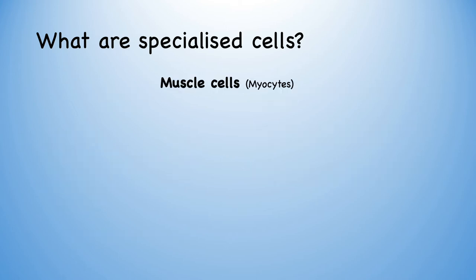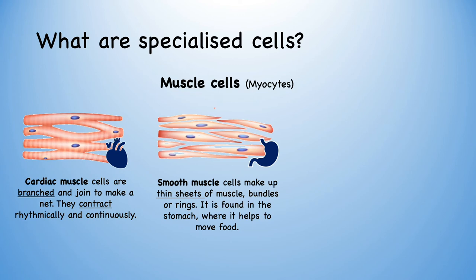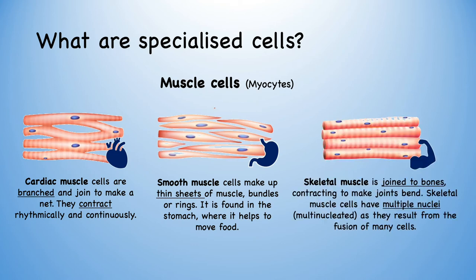The final type of specialised cell we'll look at today is muscle cells, or myocytes. There are three main types. Firstly, cardiac muscle cells, which are branched to form a tight net and contract rhythmically and continuously to keep our hearts beating. Secondly, smooth muscle cells, which make up thin sheets of muscle bundles or rings. They're found in the stomach and are important in pushing food down through a process called peristalsis. And finally, skeletal muscle, which joins bones and contracts to make joints bend. These are multinucleated — meaning they have multiple nuclei — as they resulted from the fusion of several different muscle cells.